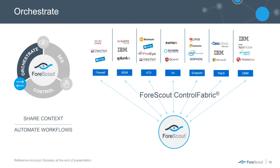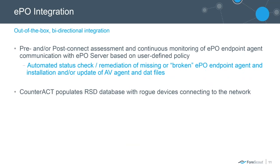Orchestration is important as well — we want to bring all these tools together so you can automate your workflows. What you get is an out-of-the-box bidirectional integration with ForScout and McAfee. You don't need any custom APIs or SQL database coding — it's literally out-of-the-box. You provide credentials to the appliance and we handle everything. It's assessment and continuous monitoring of agent health — making sure the agent is not only installed and running, but also communicating back to the EPO server. We can also populate the RSC database with rogue devices connecting to the network that EPO may have missed.